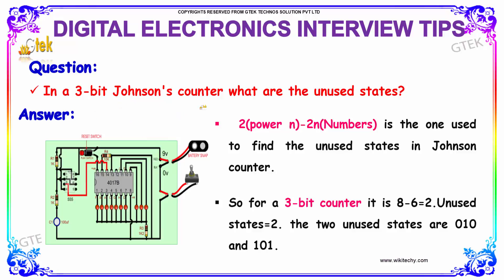In a 3-bit Johnson counter, what are the unused states? The answer uses 2 power n, where 2n is the formula used to find the unused states in a Johnson counter.